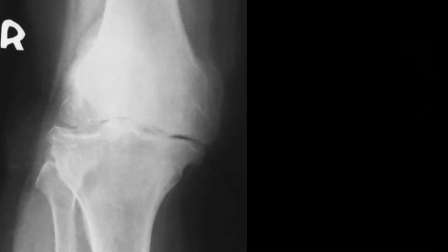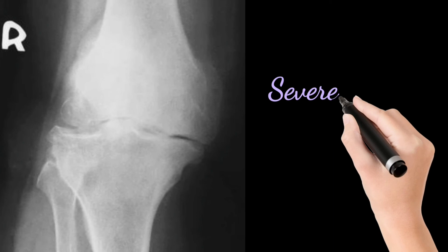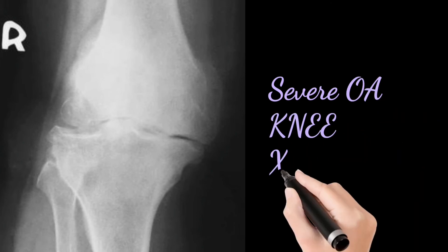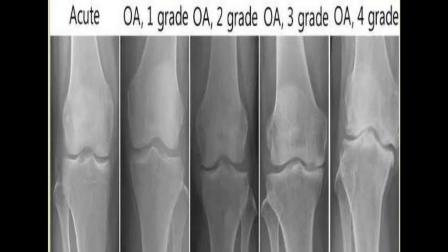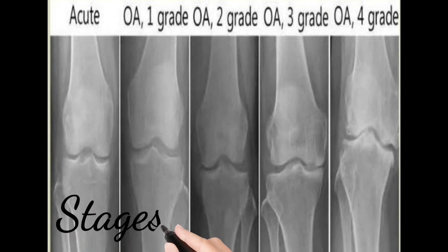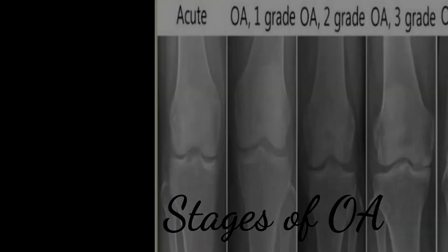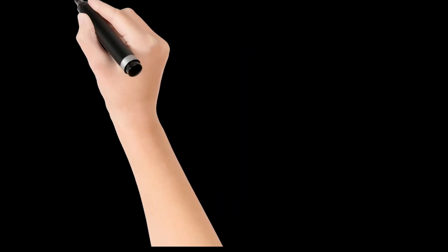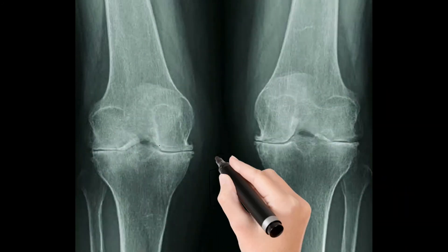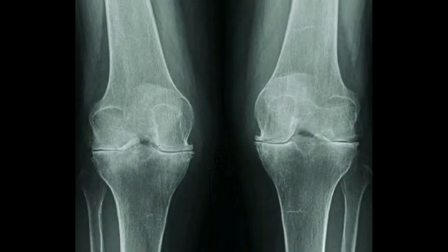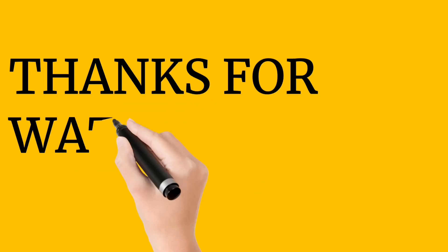This is the X-ray of a normal knee joint. Now we will look at the osteoarthritis X-rays. This is a very severe case of osteoarthritis as seen on this X-ray. These are the grades — depending upon severity, OA is divided into four grades. This is another X-ray for OA. I hope you now have a little idea about osteoarthritis.